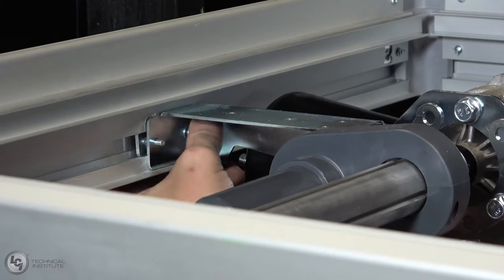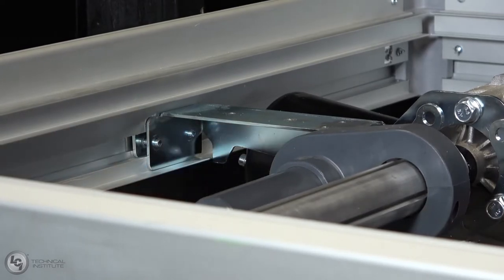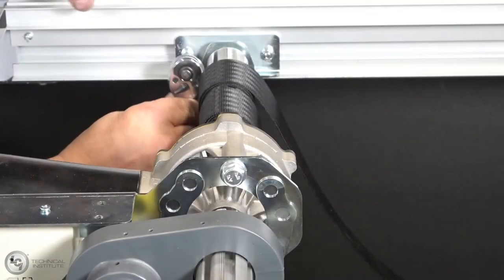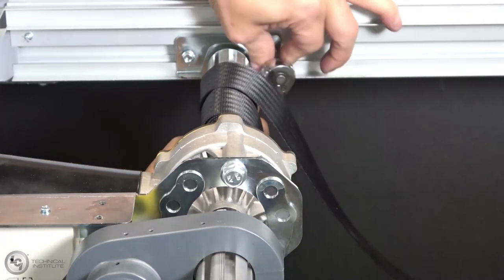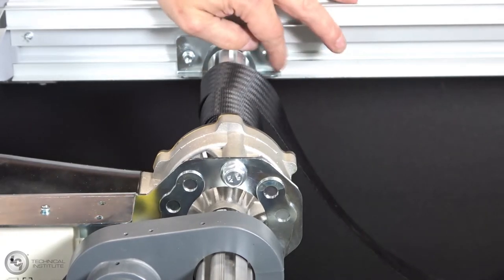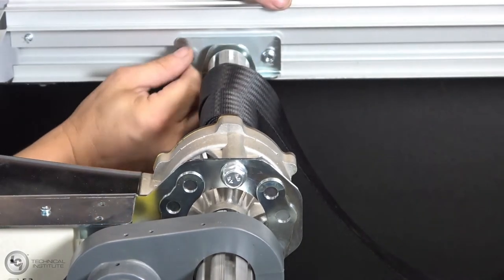Now that the ACS bracket is removed, you need to free up the centering brackets on the side of the driveshaft. To do this, again use a socket to loosen and remove both nuts securing the bracket to the rear plate. Do this on both sides of the driveshaft.